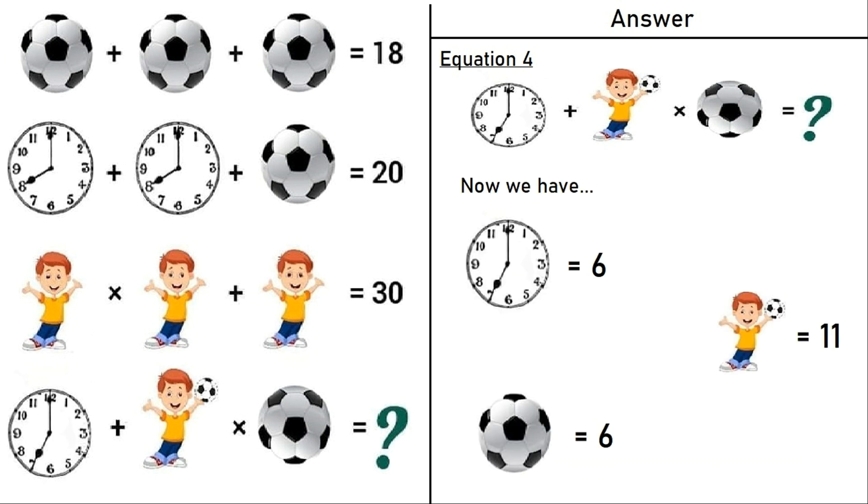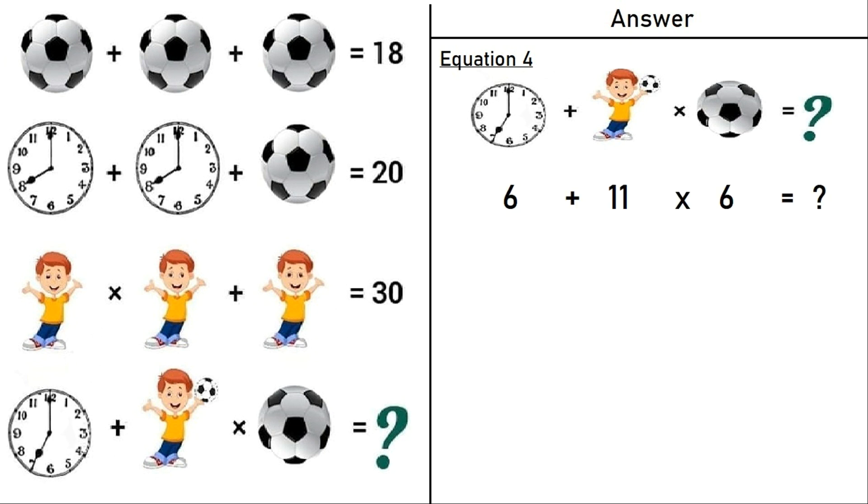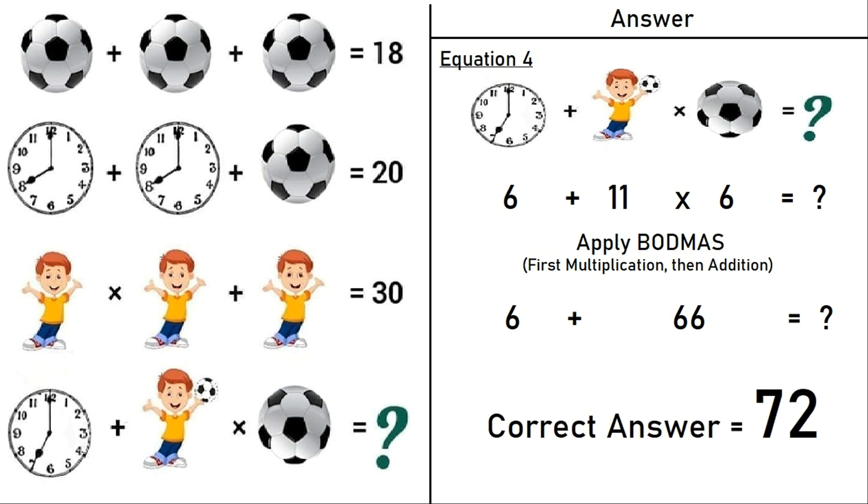Now we have a clock with time 7 is equal to 6, a football is equal to 6, a boy with football is equal to 11. So when putting all the values in equation number 4, we have 6 plus 11 times 6 is equal to question mark. Now we will apply BODMAS which says we will first do multiplication and then addition. So 6 plus 66 is equal to question mark. The correct answer of this puzzle is 72.